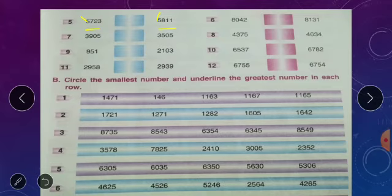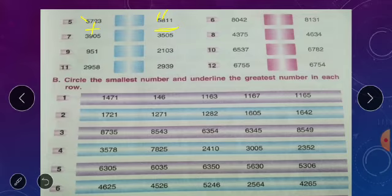When thousands place numbers are the same, look at the hundreds place. Here the hundreds digit is 7, and here it is 8. Eight is bigger, so 5811 is the greater number — the number with hundreds digit 8 is the greatest number.